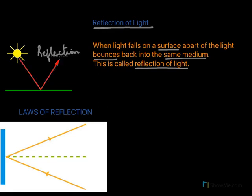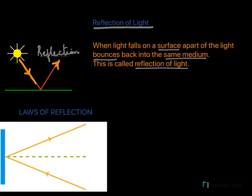The ray that comes in is called the incident ray. When this incident ray is reflected by the surface, it follows a certain path — it does not randomly go in any direction. The path followed by the reflected ray is governed by the laws of reflection.